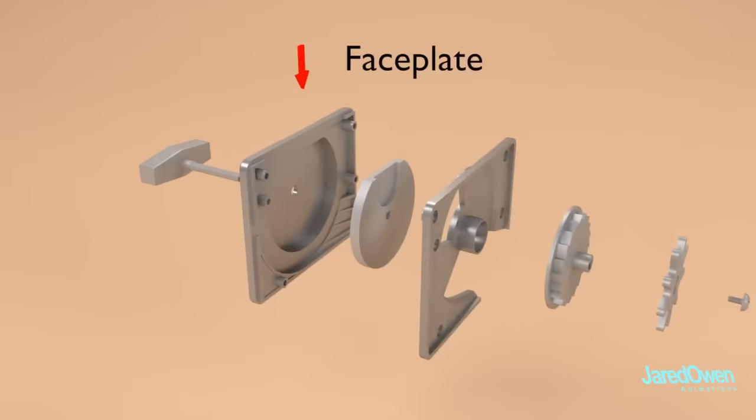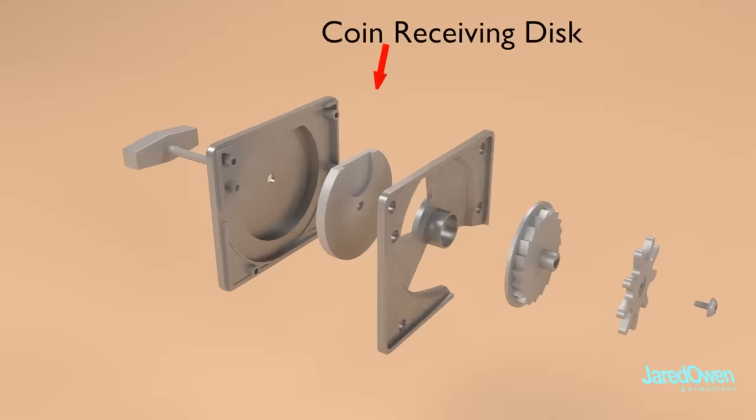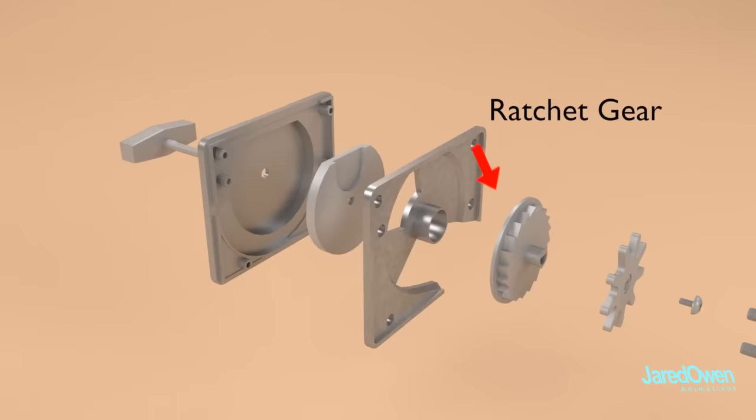This is the face plate, the back plate, the coin receiving disk, the ratchet gear, the spur gear, and the turn handle.